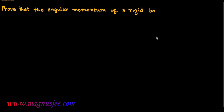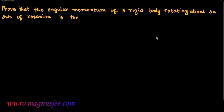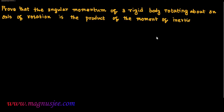Prove that the angular momentum of a rigid body rotating about an axis of rotation with an angular velocity omega is the product of the moment of inertia of the body and its angular velocity.